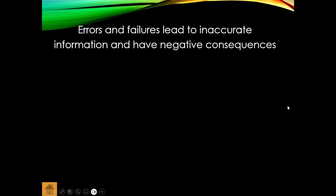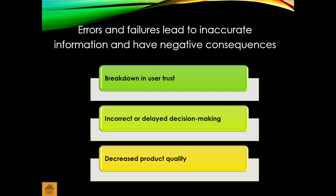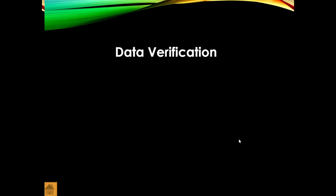Errors and failures lead to inaccurate information and have negative consequences. It can lead to a breakdown in user trust and incorrect decision making — if you're making decisions based on incorrect data, that can have severe consequences. There can also be decreased product quality. Think about Elon Musk's booster rocket — imagine if there's an error in that code. It could destroy equipment worth hundreds of millions or billions of dollars.